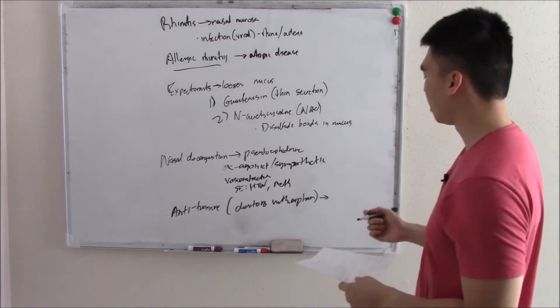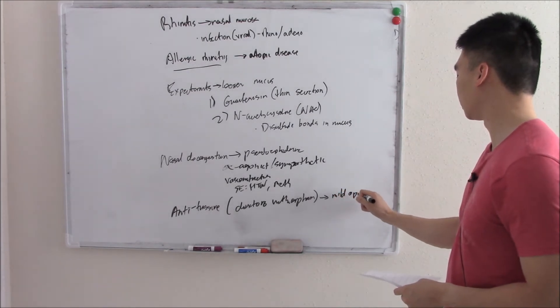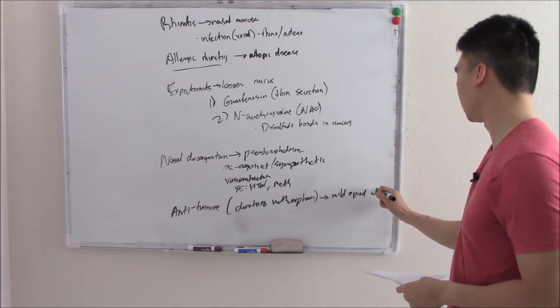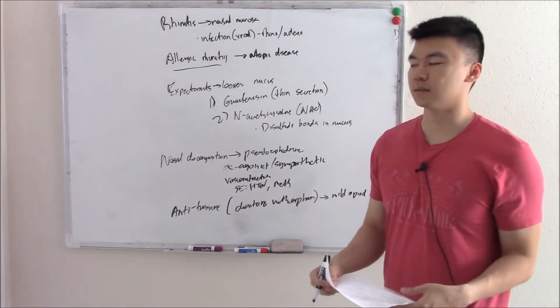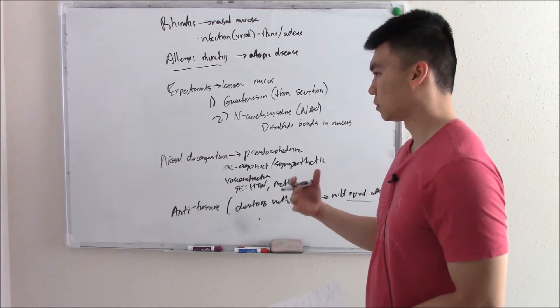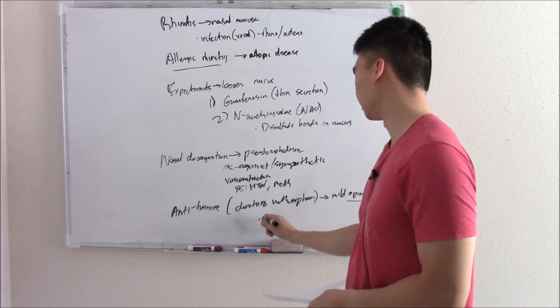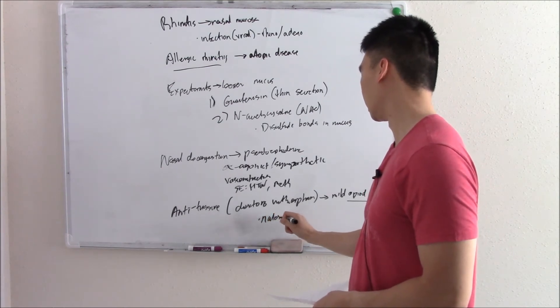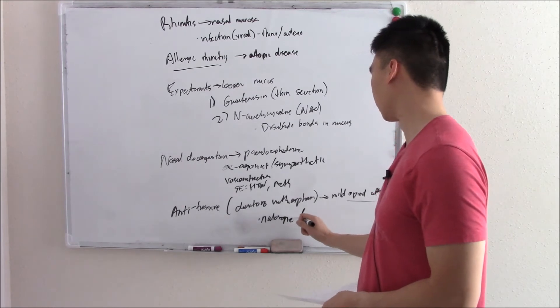This is seen in your cough syrups. And they have a mild opiate effect. So illicitly, a lot of people like to mix it with Sprite and make a drink out of it. And if you overdose, you treat it as any other opiate overdose. So you give them naloxone, which is an opiate antagonist. Naloxone for overdose.